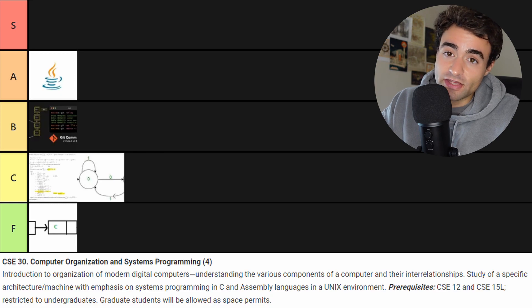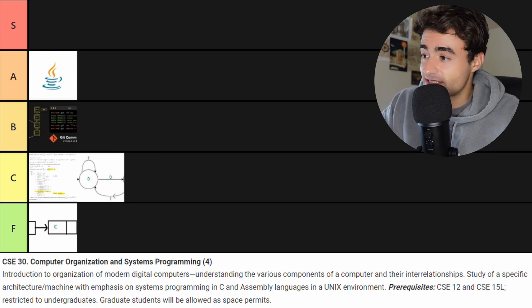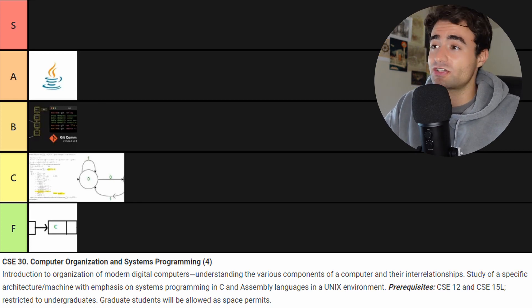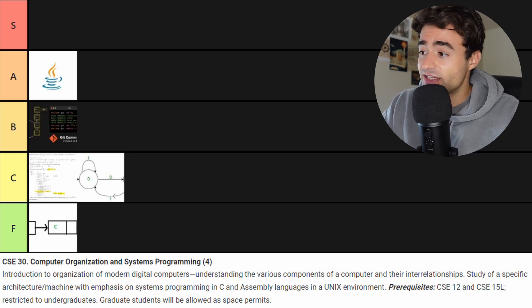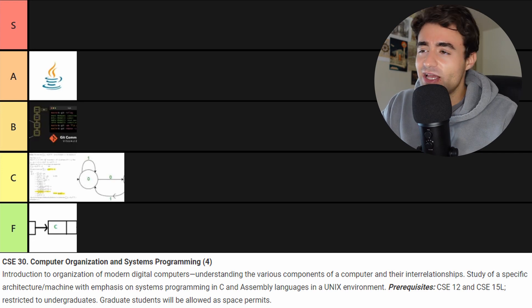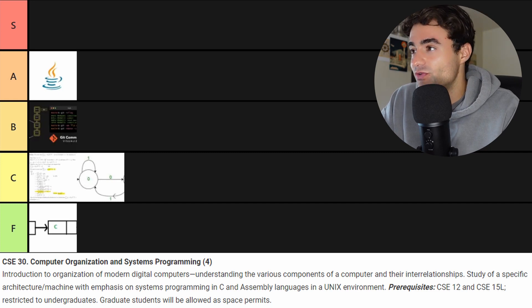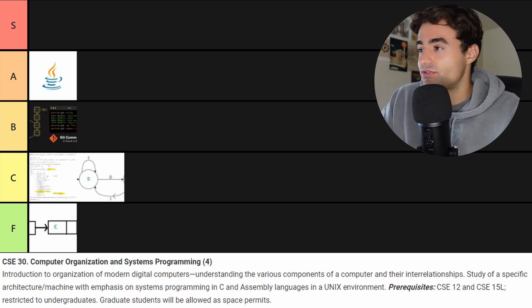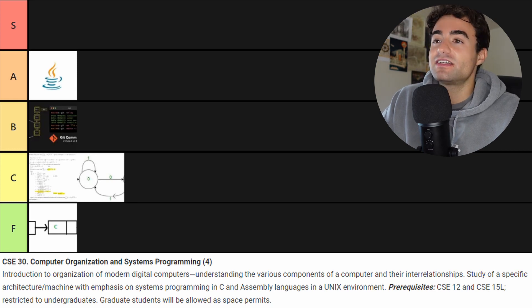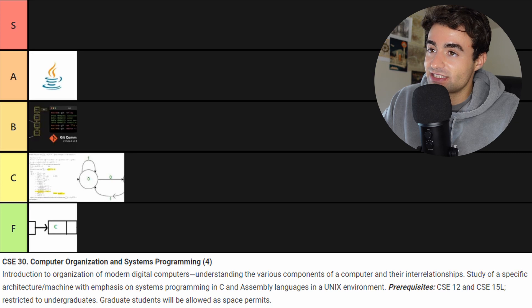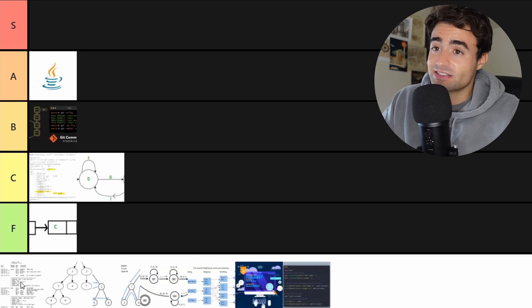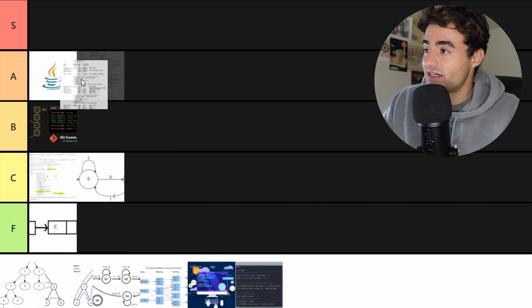This next one is CSE 30, which is computer organization and systems programming. I've raved about this class in previous videos. We basically used assembly and a little bit of C and you really get deep into very low level programming. I honestly thought it was really, really interesting. The homework assignments were very fair — not too hard, not too easy. The professor seemed like a really cool person who knew what he was talking about and made the class interesting. So I think it's honestly going to be an S tier.